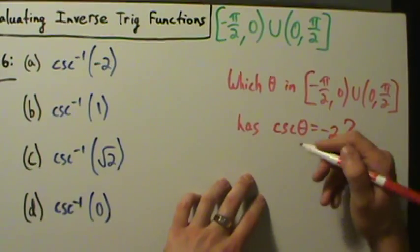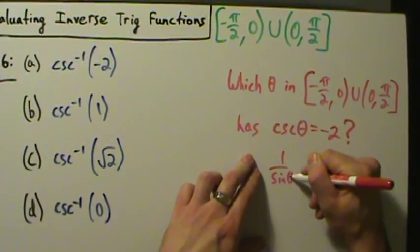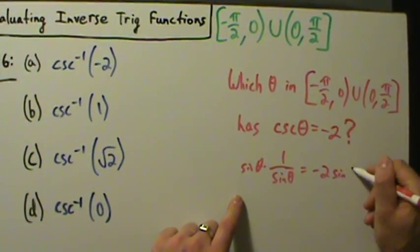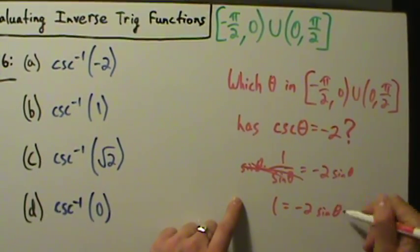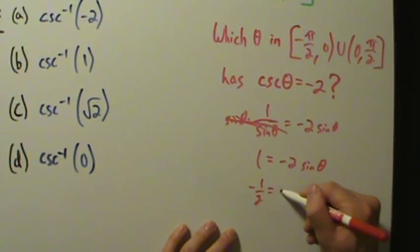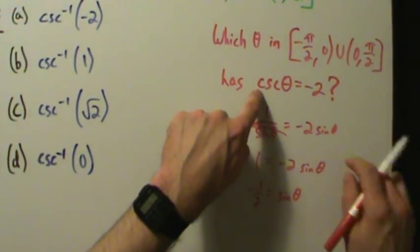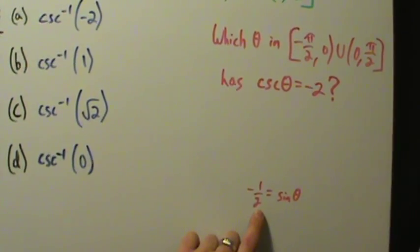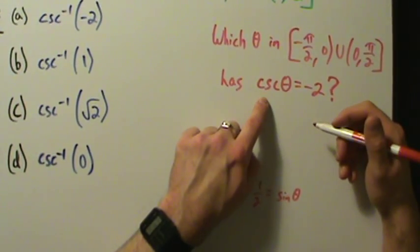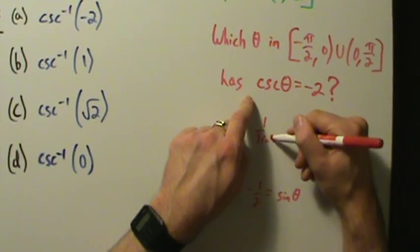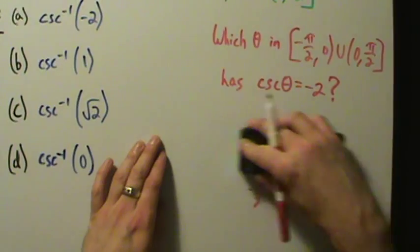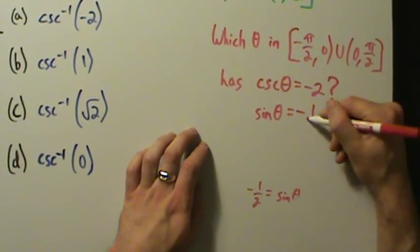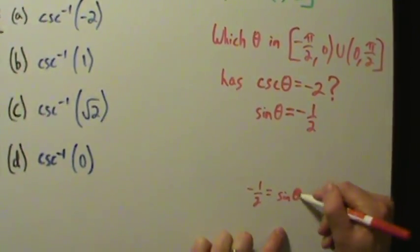We'll show the long way here. Cosecant of theta is 1 over sine of theta. So if cosecant of theta is negative 2, then 1 over sine of theta is negative 2. Multiply both sides by sine of theta, and we get 1 equals negative 2 sine of theta. Divide both sides by negative 2, so negative 1 half equals sine of theta. As a shortcut, we can just take the reciprocal of both sides — the reciprocal of cosecant is sine, so sine of theta equals negative 1 half. That's exactly what we got the long way.